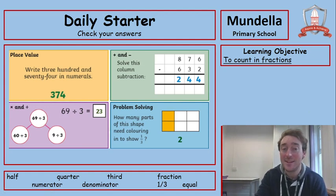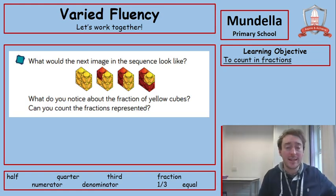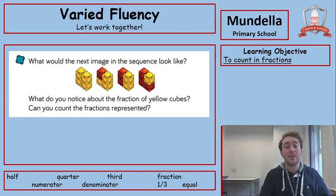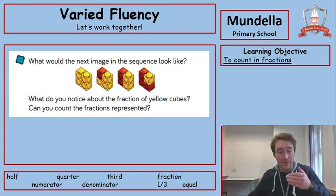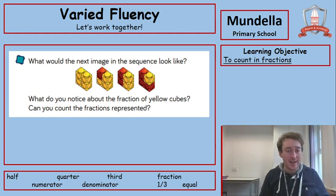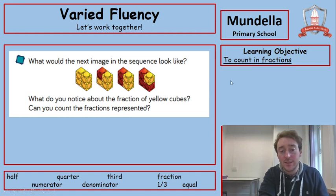Let's have a look at what we're doing today and we're doing some fractions but we're counting again. So it says here what would the next image in the sequence look like? Now a sequence is like a stage of events. What happens next? Okay, that's what it's asking us to find out. What do you notice about the fraction of yellow cubes? And can you count the fractions represented?